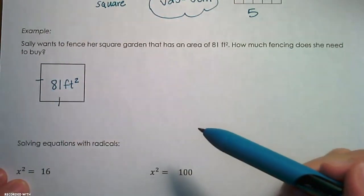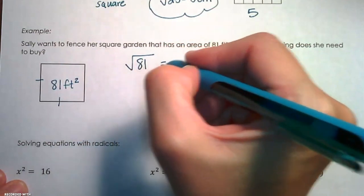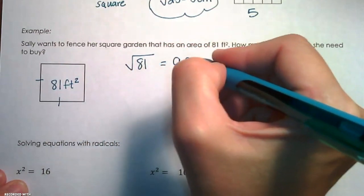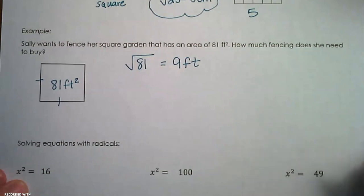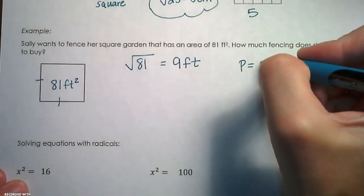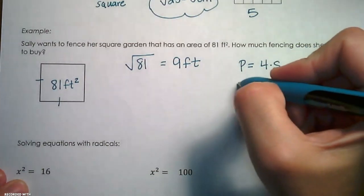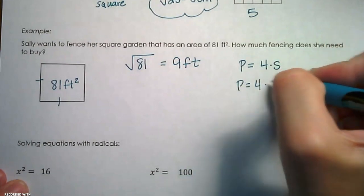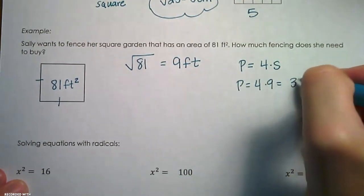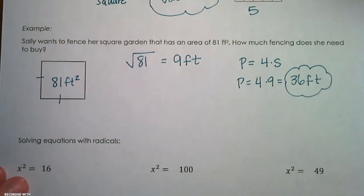So what number times itself would give me 81? Well, that's the same as finding the square root of 81, which would give us 9 feet. Now the next part of the question is asking us for the perimeter. So we need to multiply the side length times 4, or you could add up the sides 4 times either way. So I'm going to multiply 4 times that side length, and that's going to give me 36 feet.